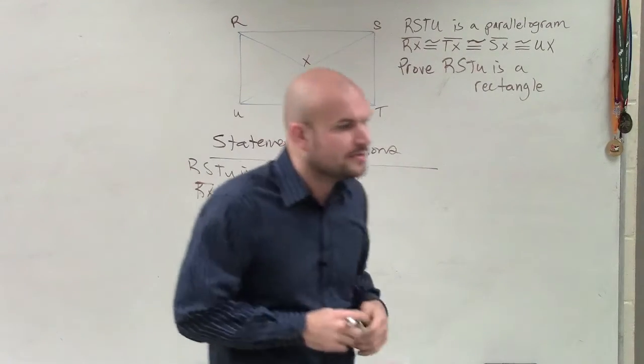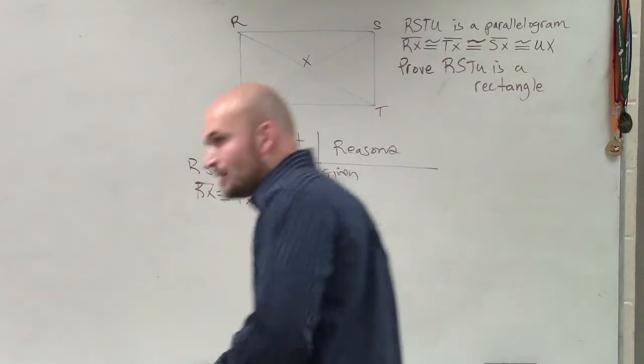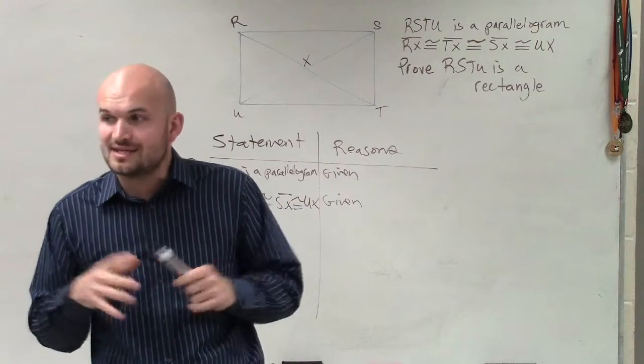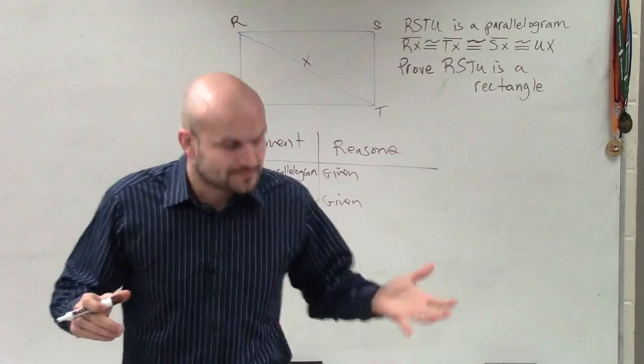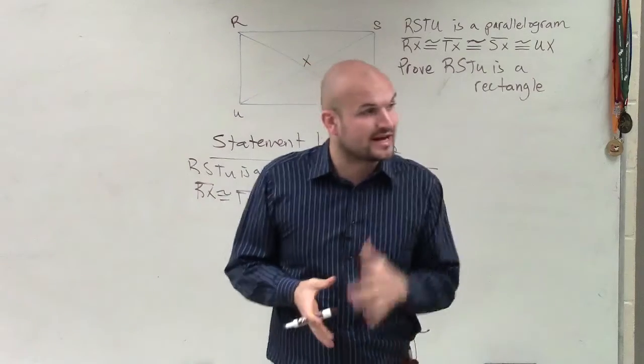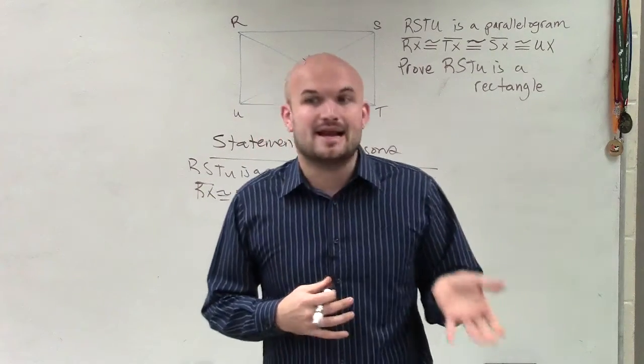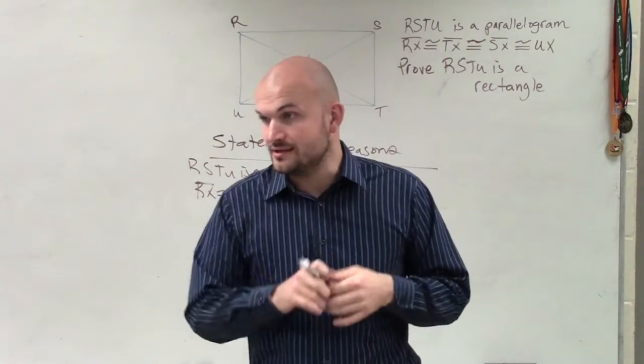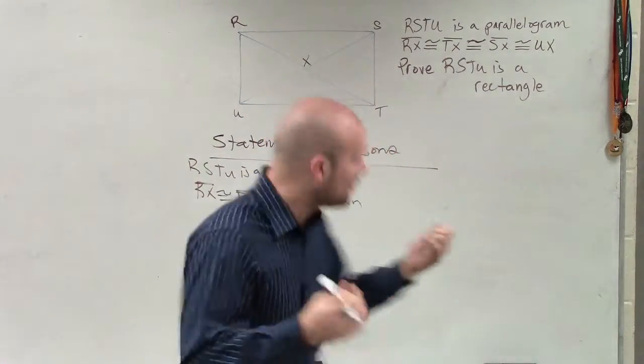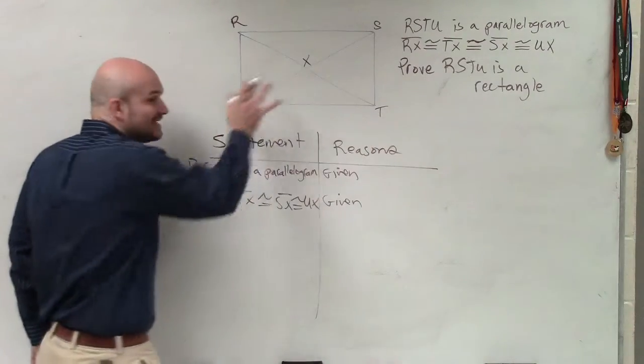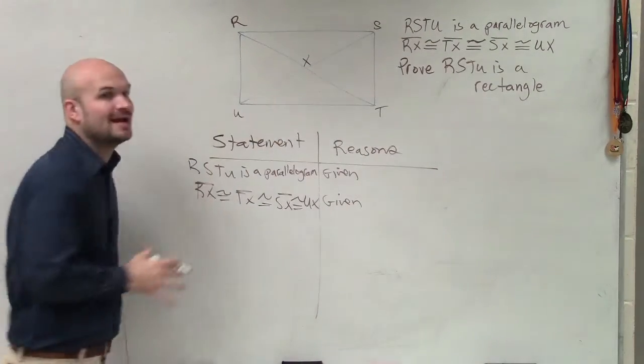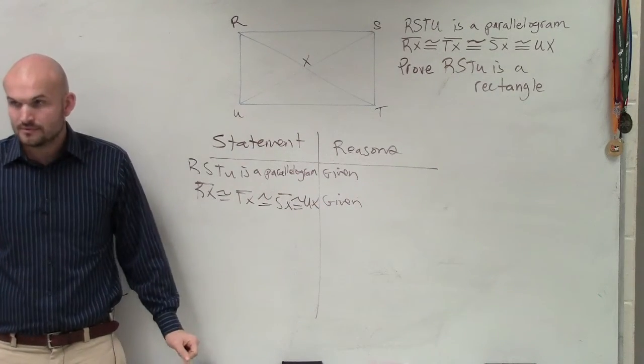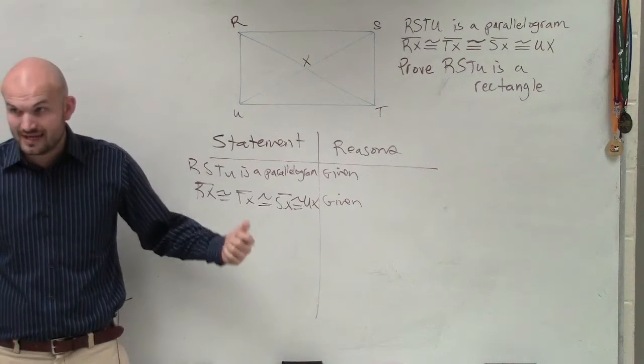So now we need to say, all right, so we have a parallelogram. What do we need to prove that it's going to be a rectangle? We're going to spend more time with this, but we already did talk about what are some of the specific characteristics that a rectangle has that not all parallelograms have. Yes, Colin? Four right angles. So if I can show that this parallelogram has four right angles, would it make sense that I could say that now I can show it's a rectangle? Yes.